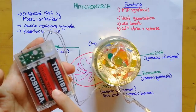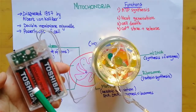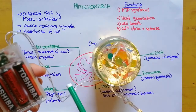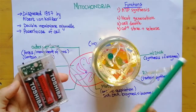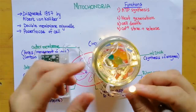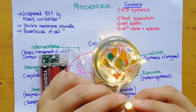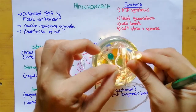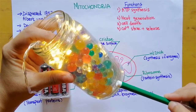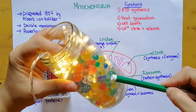The mitochondria inside a body work just like batteries. It is a powerhouse which gives power to the cells, and the cells perform their functions using that energy. Together, these cells combine and give the whole body energy to perform different functions.